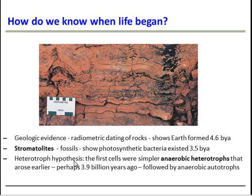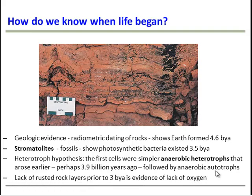This is known as the heterotroph hypothesis — the idea that anaerobic heterotrophs evolved first, followed by anaerobic autotrophs. You might also be wondering how we know there was no oxygen billions of years ago. If oxygen is in the environment, it tends to rust rocks containing certain metals. And because rusted rocks are absent prior to 3 billion years ago, that is evidence that oxygen was not around in the environment.